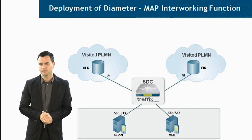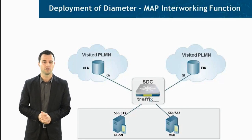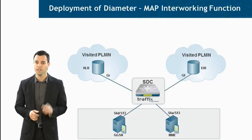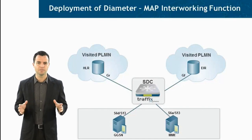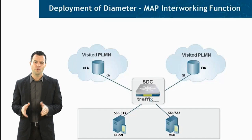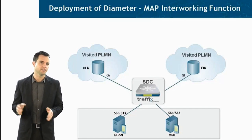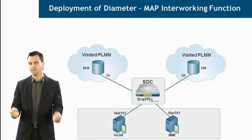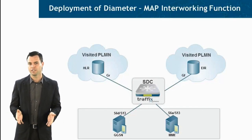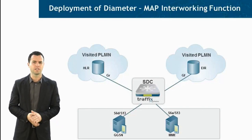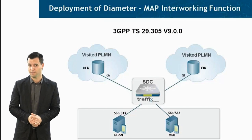There are many network use cases that apply to the Signaling Delivery Controller. However, in this demo I will give you a taste of one functionality, and that is the IWF — Interworking Function — that enables multi-protocol routing and transformation. Or, in layman's terms, a process used to interface data sent between a wireless system and a telephone network. This IWF functionality is between map-based and diameter-based interfaces, according to the 3GPP TS 29.305 V9.0.0 specification.